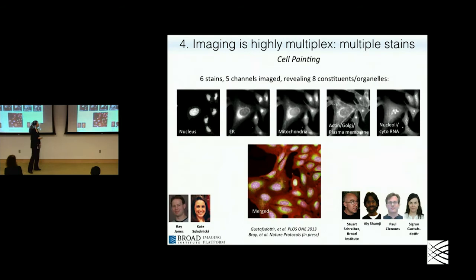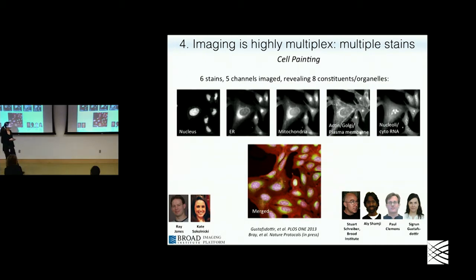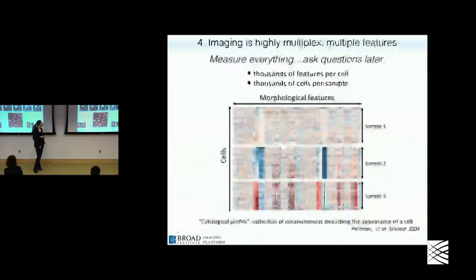It's a very quantitative technology, and it's also multiplex. You can use multiple stains in a fluorescence microscopy experiment. This shows cell painting, our assay where we use six stains imaged across five channels, revealing eight different components of the cell. For any experiment where you're looking at something in the microscope with a fluorescent marker, why not add a few more and get extra measurements? We really encourage people to use as many stains as are relevant to the biological question they're asking.